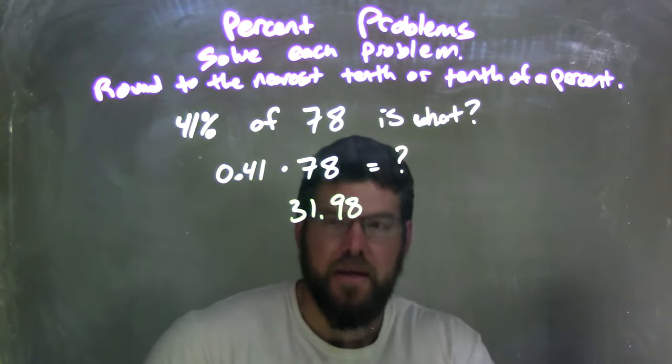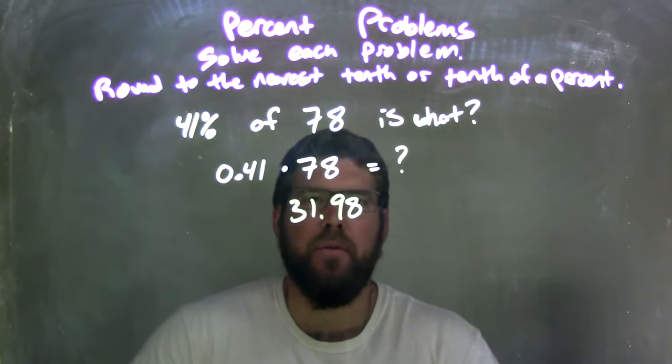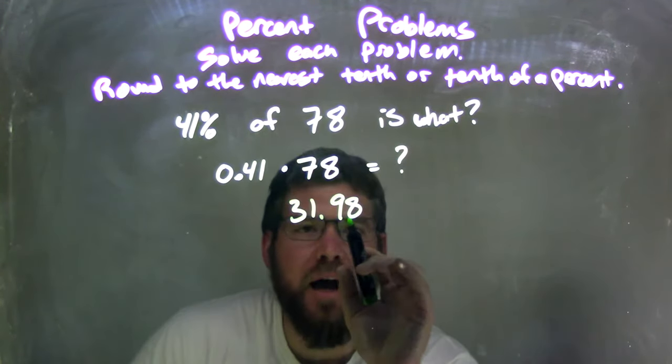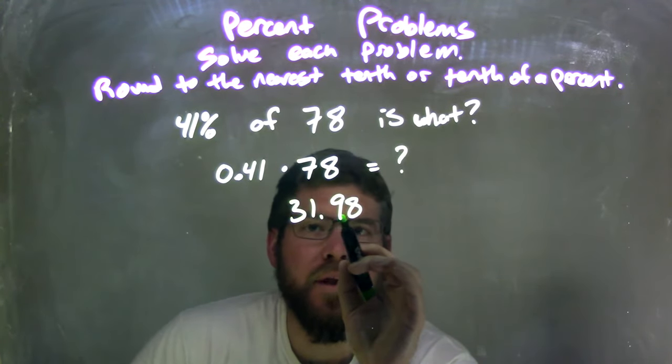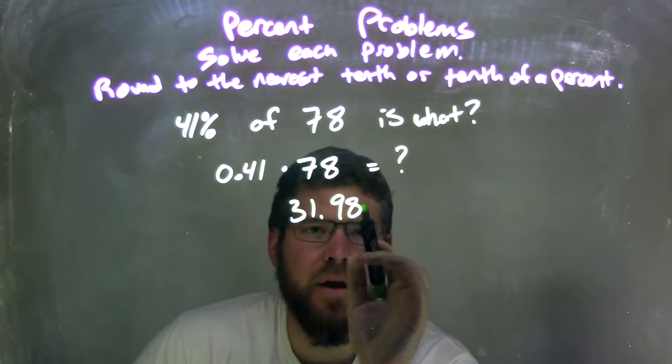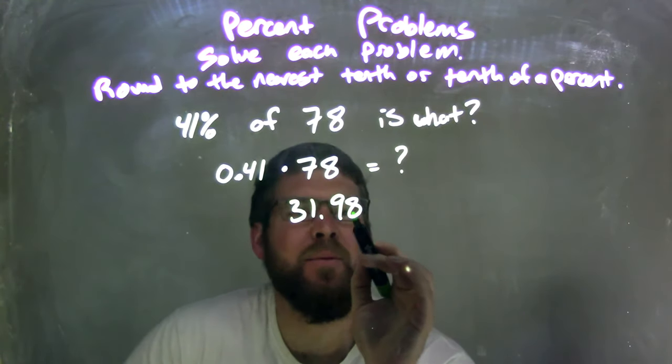But I need to round to the nearest tenth of a percent. So this one's a tricky one. I look, there's a 9 there. So if the 9 gets rounded up, it really causes the next digit up, this becomes a 2 and that becomes a 0. So we look to the right of the 9 and we see that there's an 8.